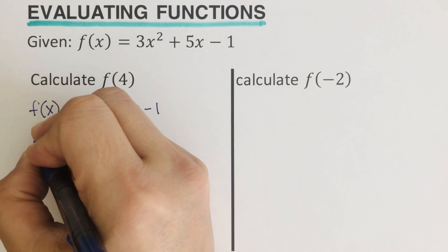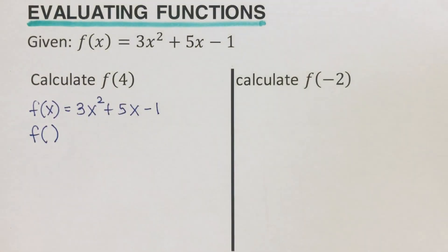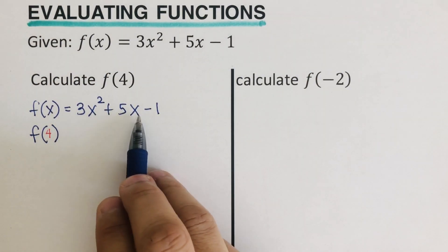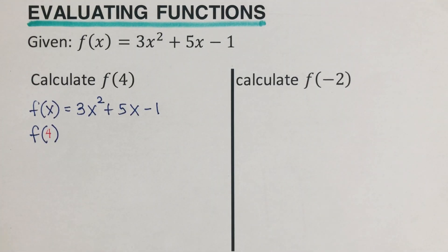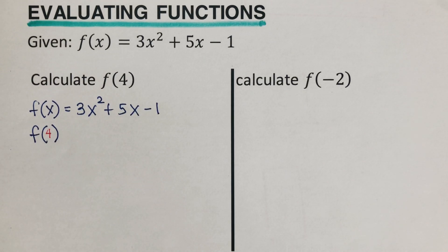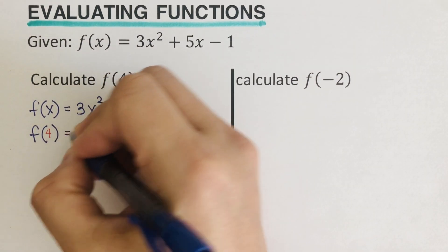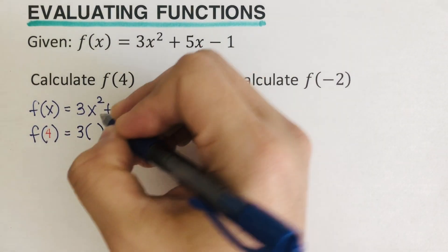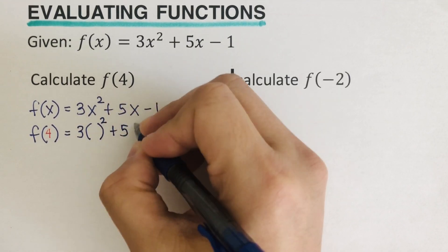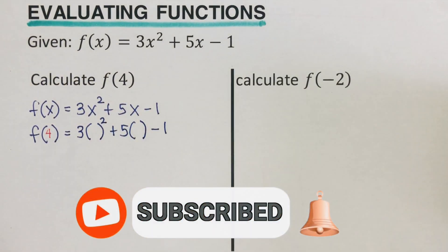We're supposed to calculate f(4), so I'm going to change the x to 4. That means in all of these we are going to put 4 in place of all the x's. Here's a very important tip: in order that we don't mess up with negatives, I recommend that you change all the x's into parentheses first before you plug in the value.